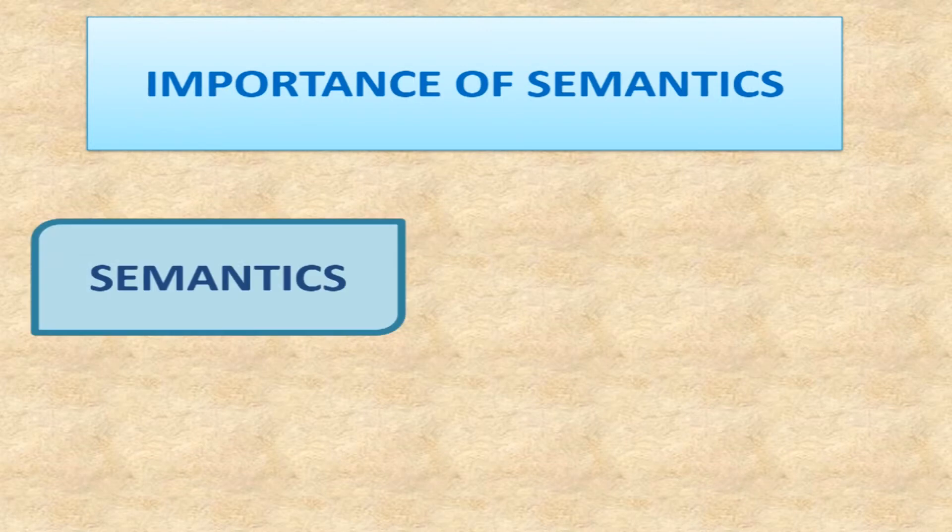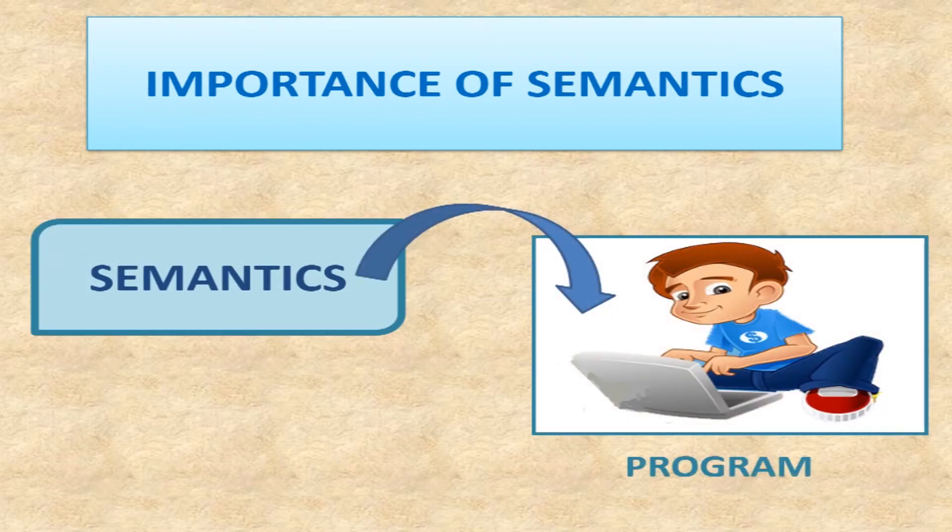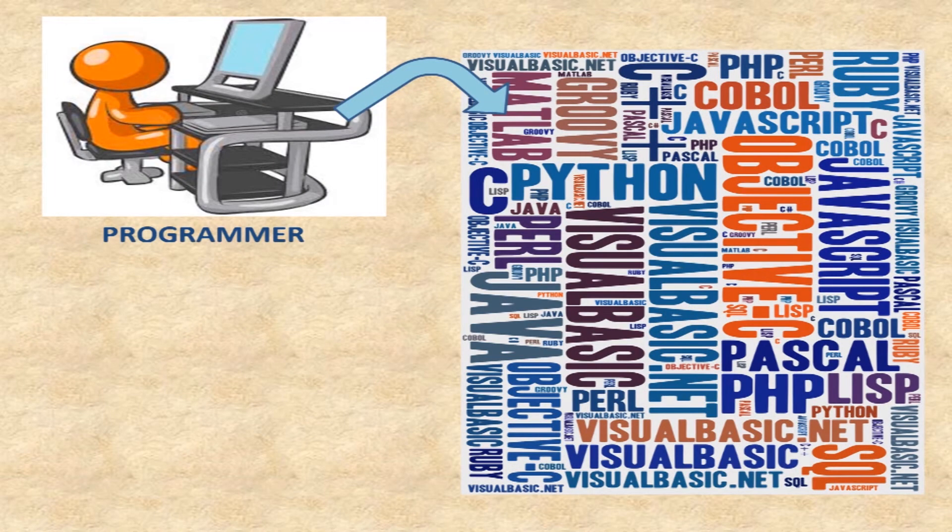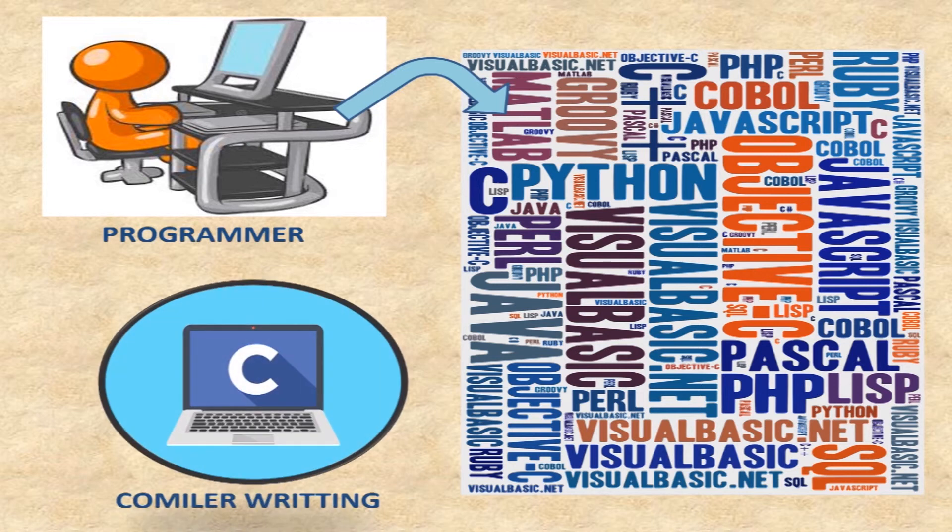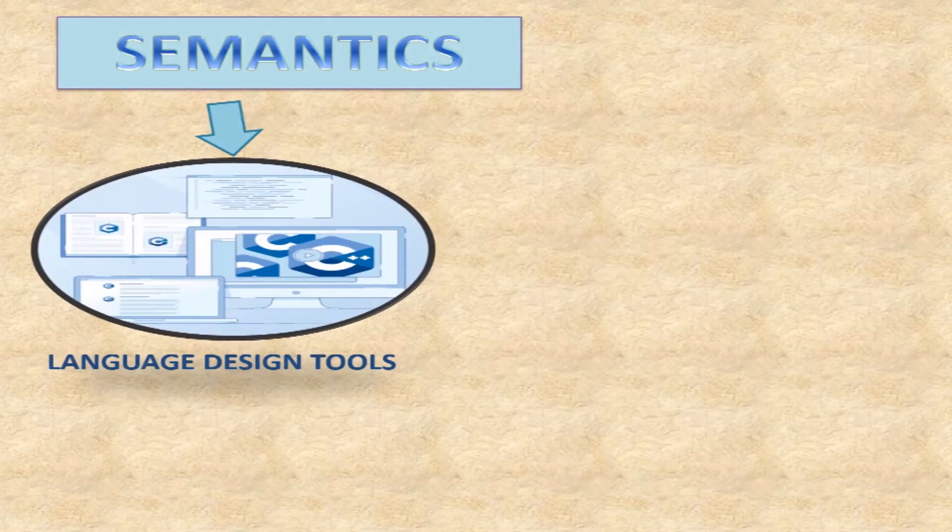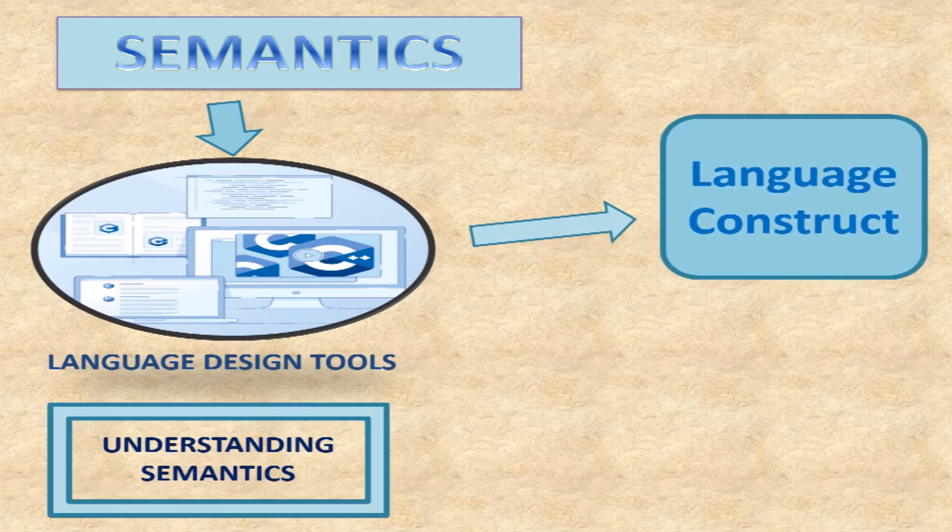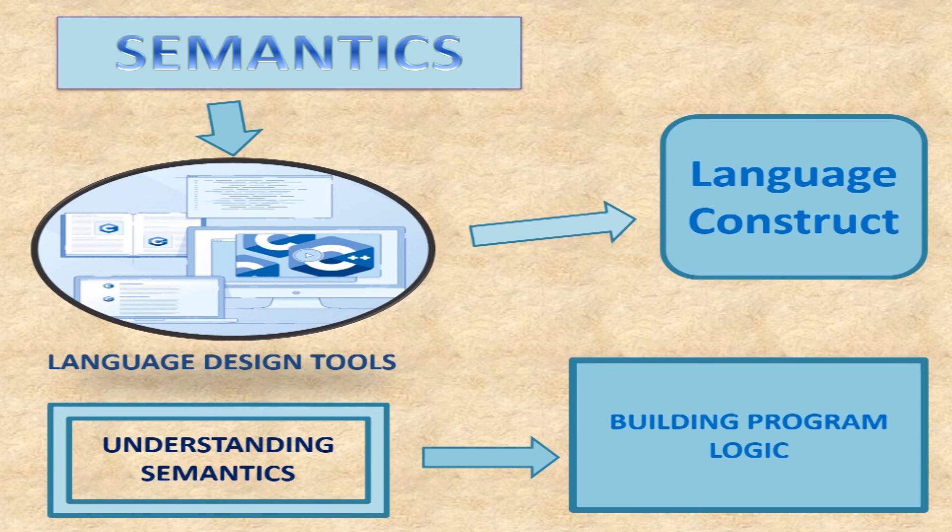Semantics tells how a program behaves. It is a concept on which programmers rely when understanding things about a particular programming language and it also deals with necessary stuff one needs in compiler writing. Semantics act as language design tools which help understand language constructs better. Understanding semantics is the foundation for building program logic.